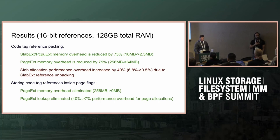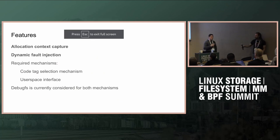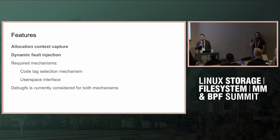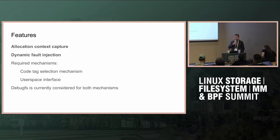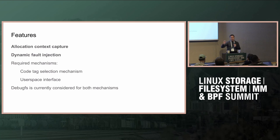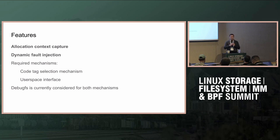For the first feature — selective disable — the plan is to first bring back context capture and dynamic fault injection from the RFC, because they require the code tag selection mechanism. That will also be required for selectively disabling tracking per file. Part of the implementation of context capture and dynamic fault injection will be reused for more features.